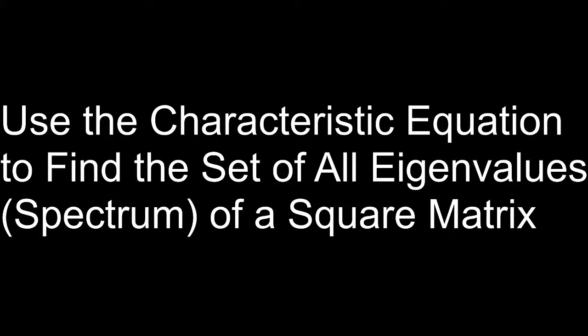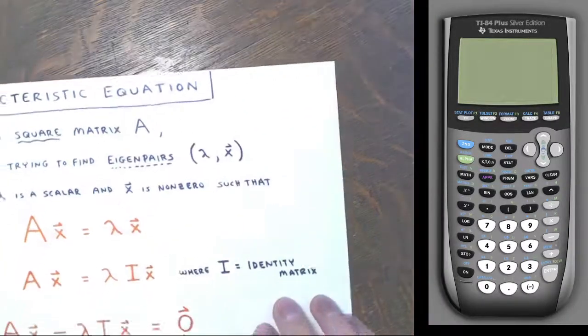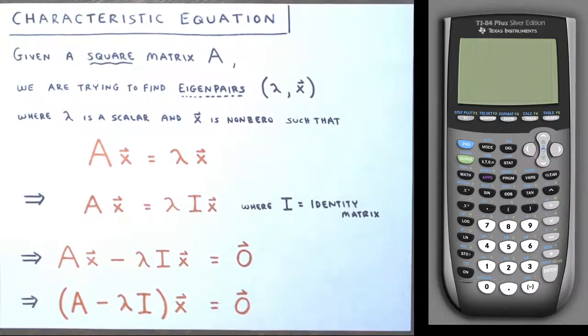Hello and welcome to this video on using the characteristic equation to find the set of all eigenvalues. This set of all eigenvalues is also referred to as the spectrum of a square matrix. In this video, I'm going to show you how the characteristic equation is derived, what it is, and then go through several examples where we find the spectrum of a given square matrix.